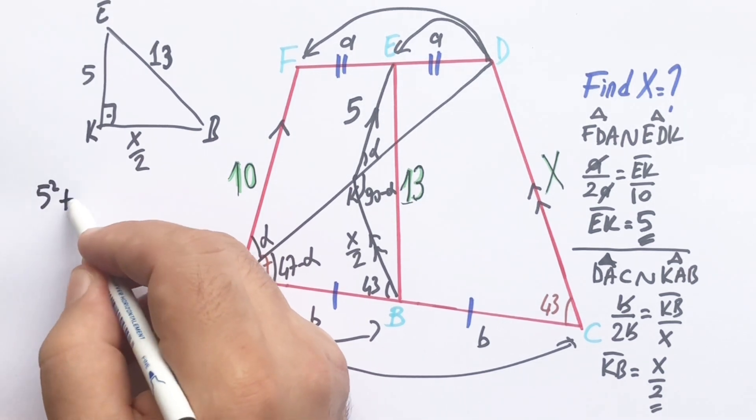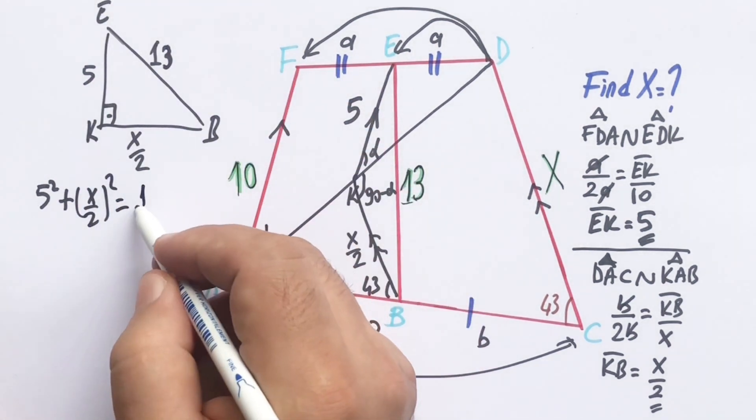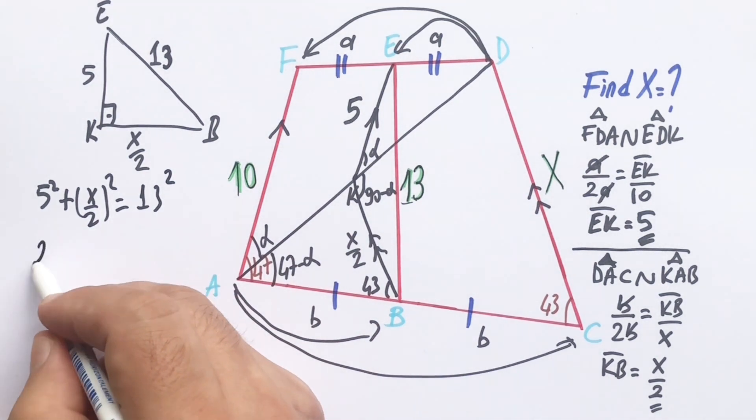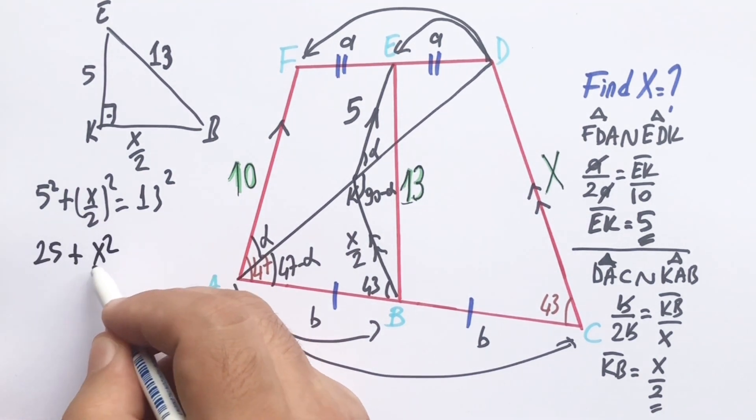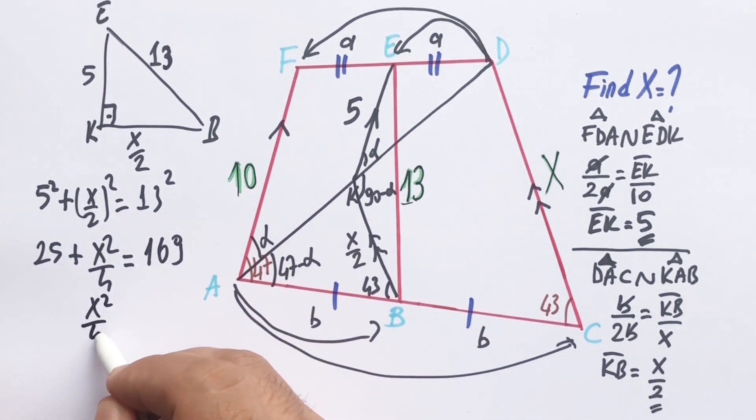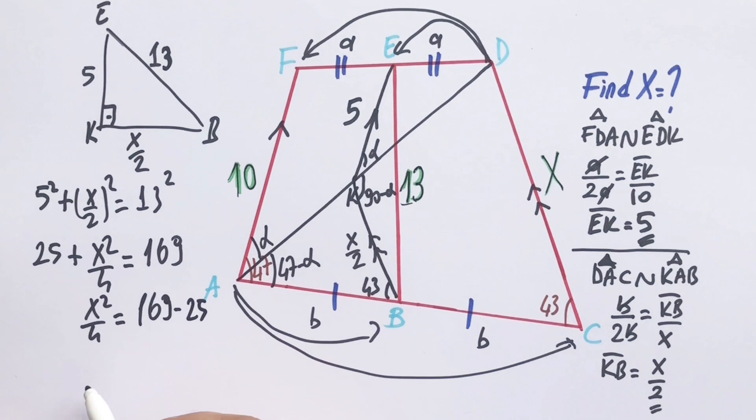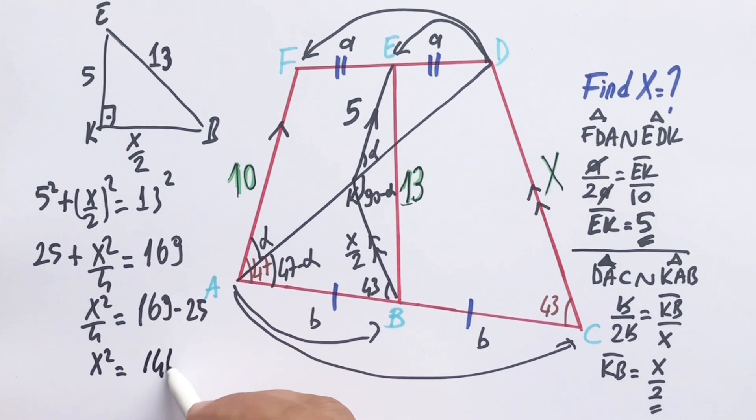5 squared plus X over 2 squared equals 13 squared. 25 plus X squared over 4 equals 169. X squared over 4 equals 169 minus 25. X squared equals 144 times 4. So let's take the square root of both sides. X is going to be 24 units.